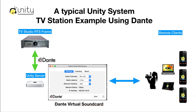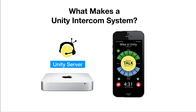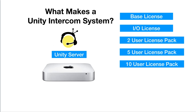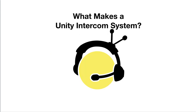Without Dante, that's no problem — we like the Motu 16A as an IO device there. So a typical Unity Intercom system is going to start with a base license, the IO license, and some user licenses. Oftentimes it's going to have a little more muscle to it, with the advanced program feed and the expanded channels and groups. I'm Mike Marston — you can call up and ask for me anytime. We're here to help, we appreciate you guys, and thanks for watching.